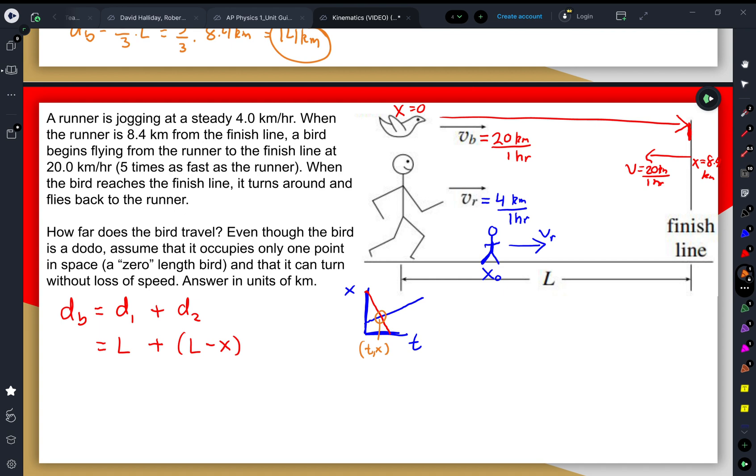Now the only issue with this is this is not actually what the position-time graph would look like for this entire region. Instead, it would look something similar to this. Where the maximum position would be 8.4 kilometers, the starting position would be 0. The runner would constantly be increasing their position until they got to that. And the bird, they would start off at a position of 0, and they would quickly increase to that position of 8.4.